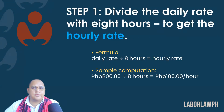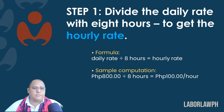Step 1: Divide the daily rate by 8 hours to get the hourly rate. The formula is daily rate divided by 8 hours equals hourly rate. By way of sample computation, given our earlier assumption, the 800 pesos daily rate will be divided by 8 hours and we will get 100 pesos per hour hourly rate.